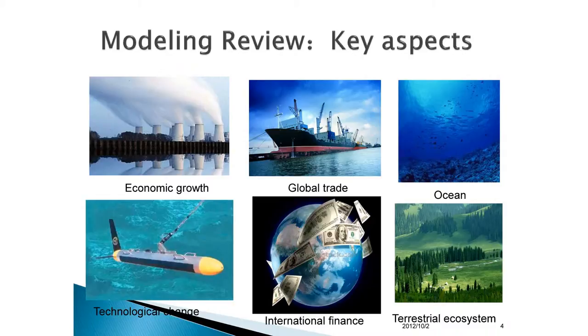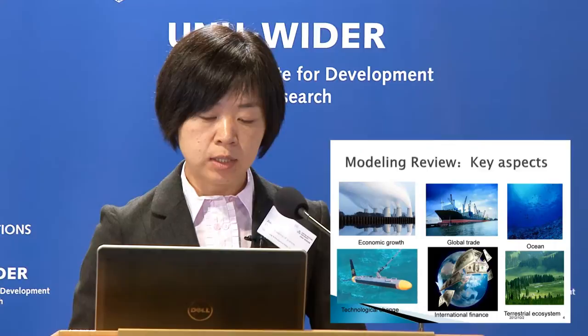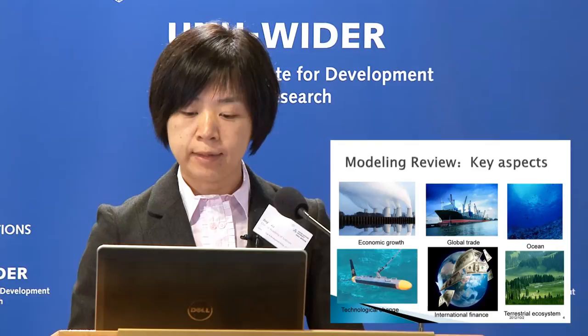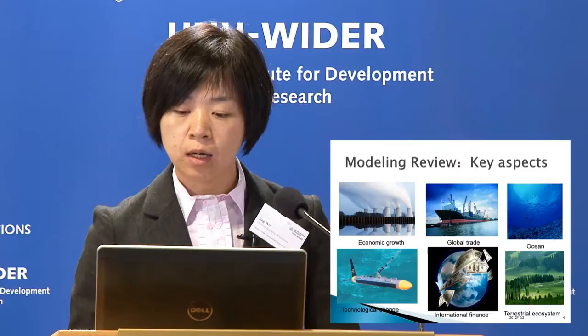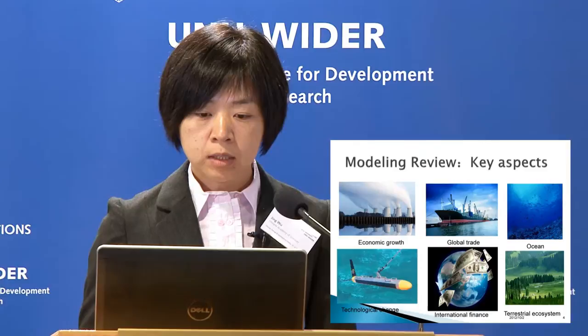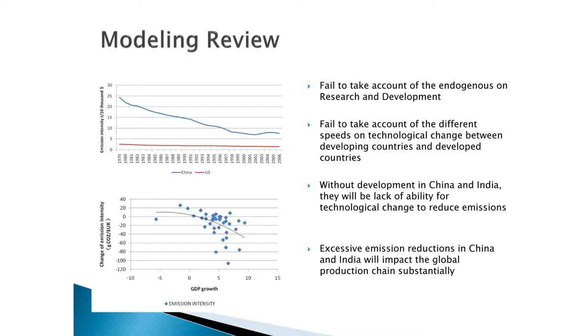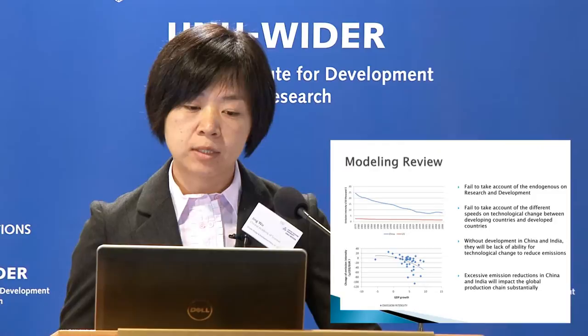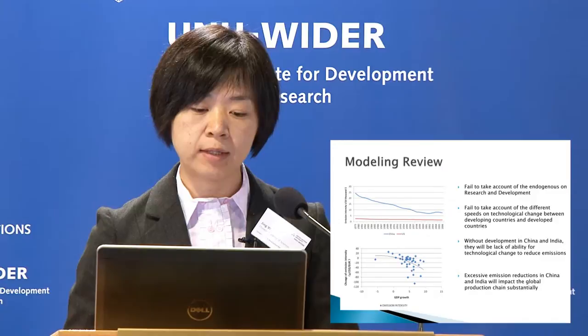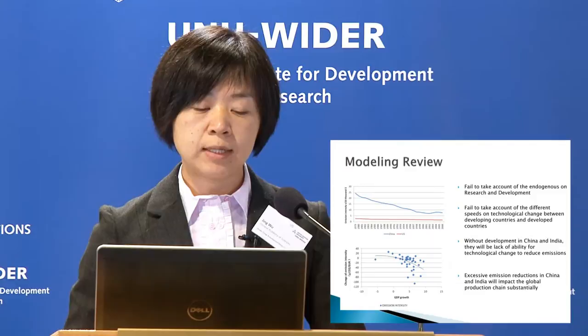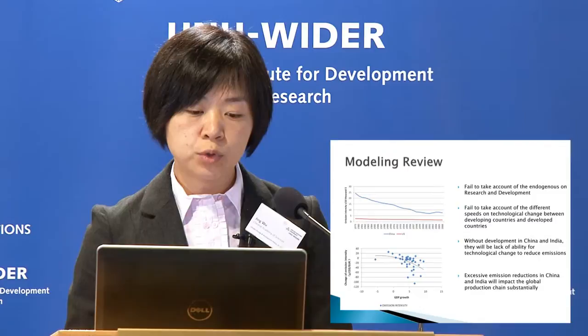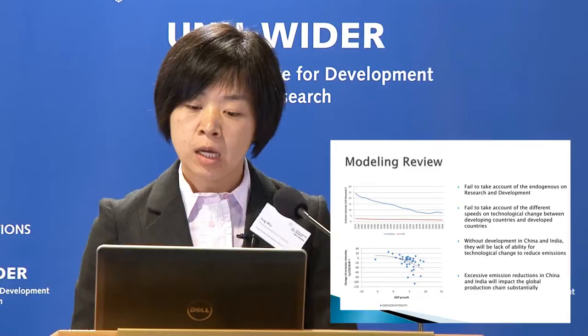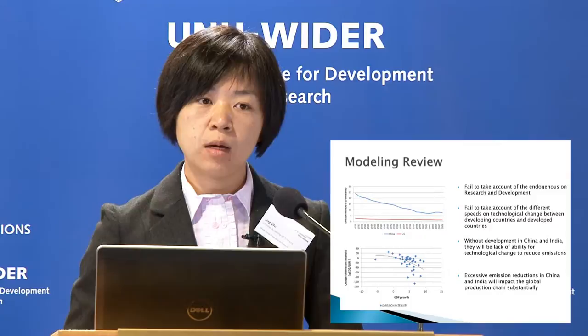At the current stage, there are some key aspects in IAMs we have to work on, including economic growth, technological change, global trade, international finance, and the carbon cycle involving the ocean and terrestrial ecosystems. To take technological change as an example: in Nordhaus's model, the speed of technological change in developing and developed countries is almost the same. But according to statistical data, we found that technological change in developing countries is much faster than that of developed countries, so we must pay close attention to that when modeling climate change.